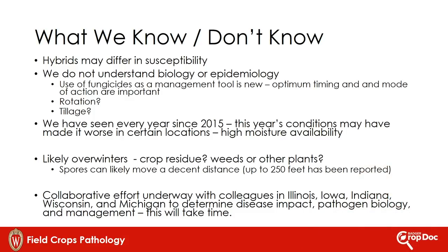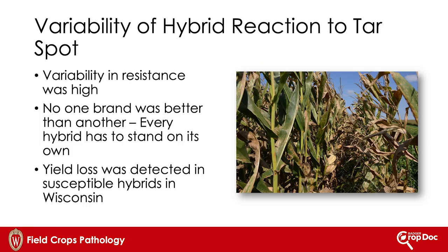All of this is being supported by a team effort in Illinois, Iowa, Indiana, and Michigan trying to understand how to improve management moving forward. When it comes to hybrid susceptibility, we know there's big variation in reaction to tar spot. We had some hybrids that were highly resistant and some that were highly susceptible. However, no hybrid was immune — we could find some tar spot in every hybrid across the state. No one brand was better than another, so every hybrid has to stand on its own. You need to study the data on individual hybrids and try to identify those that showed some resistance. Yield loss was detected on susceptible hybrids.